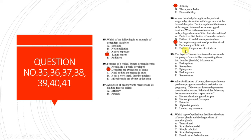Question 39: The layer of connective tissue that surrounds a group of muscle fibers, separating them into bundled fascicles, is known as perimysium. Perimysium covers a bunch of muscle fibers and groups them into fascicles, while epimysium covers the whole muscle.